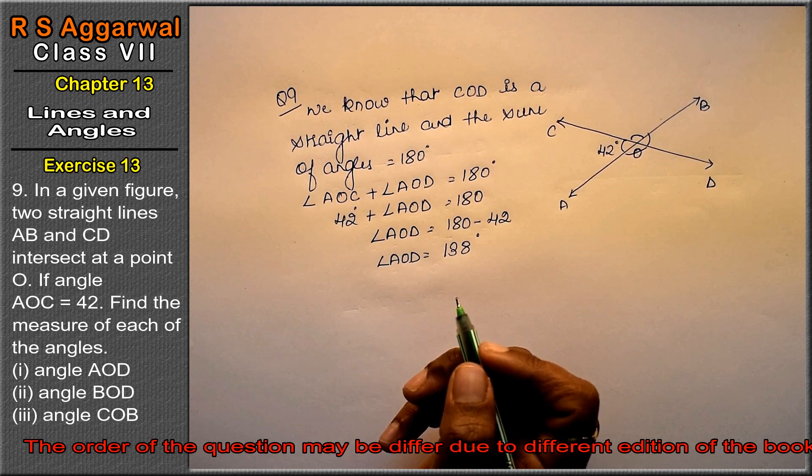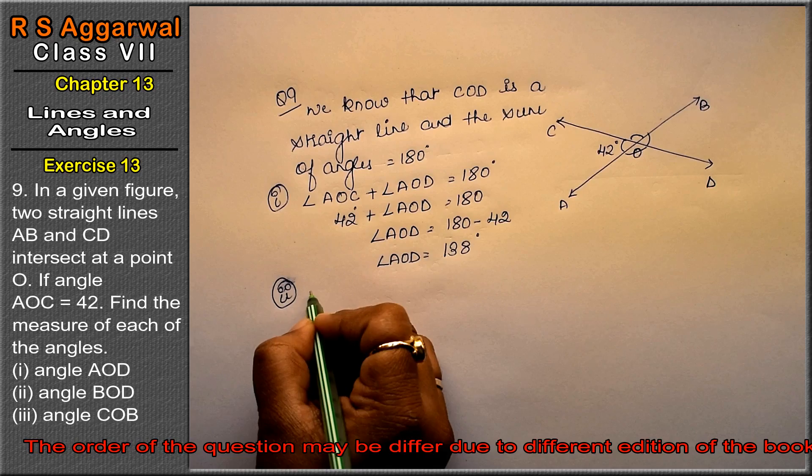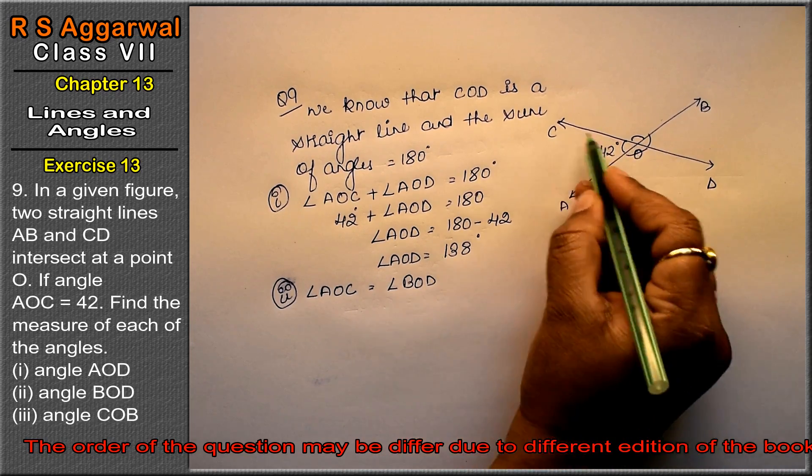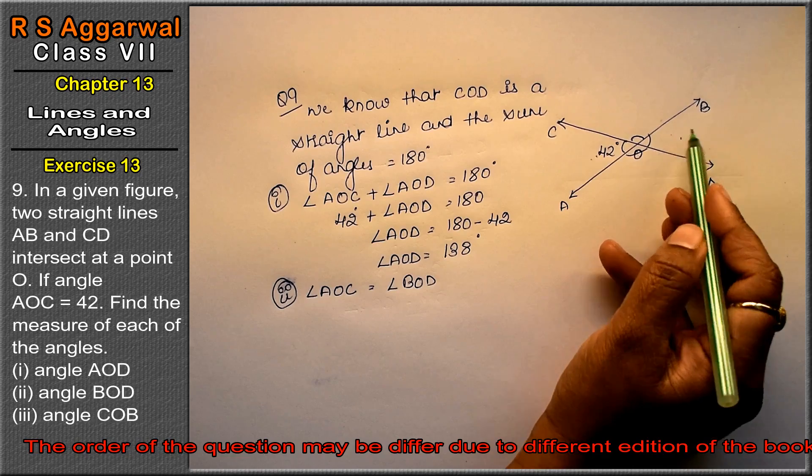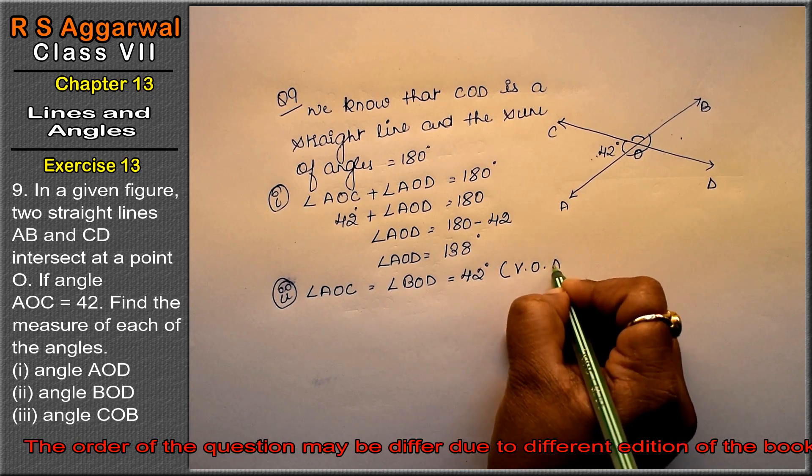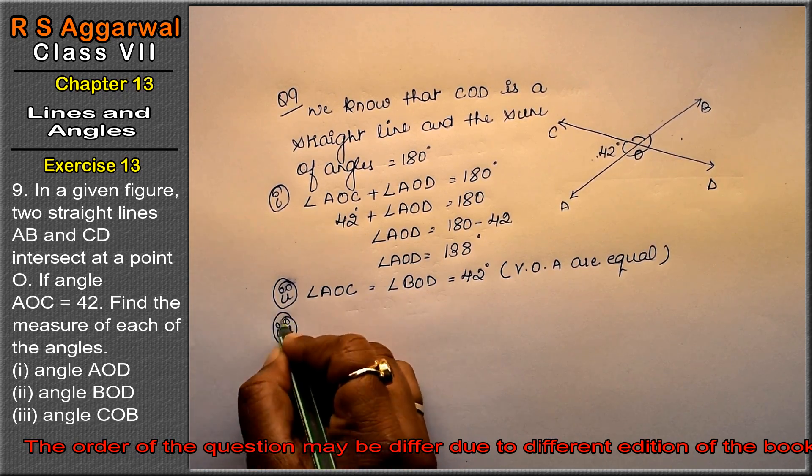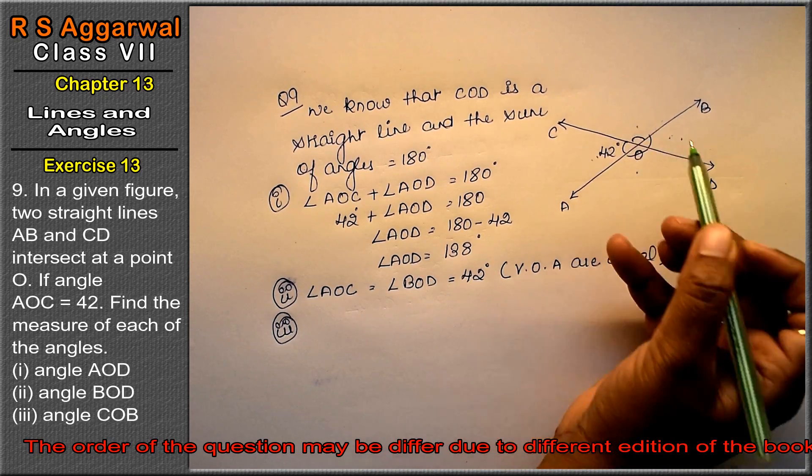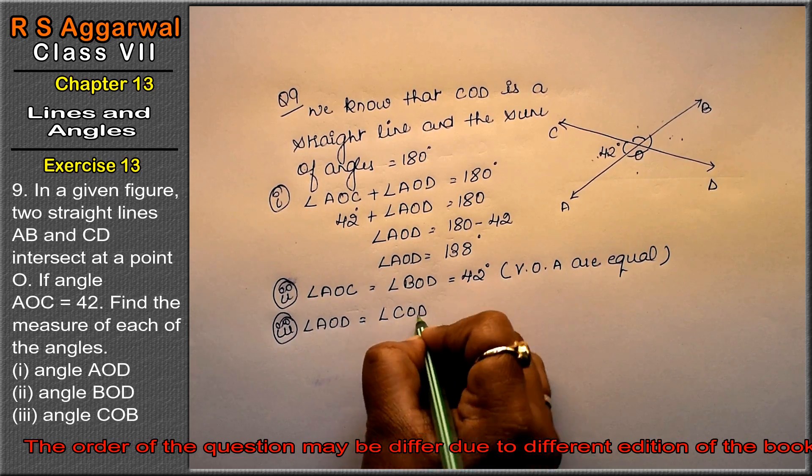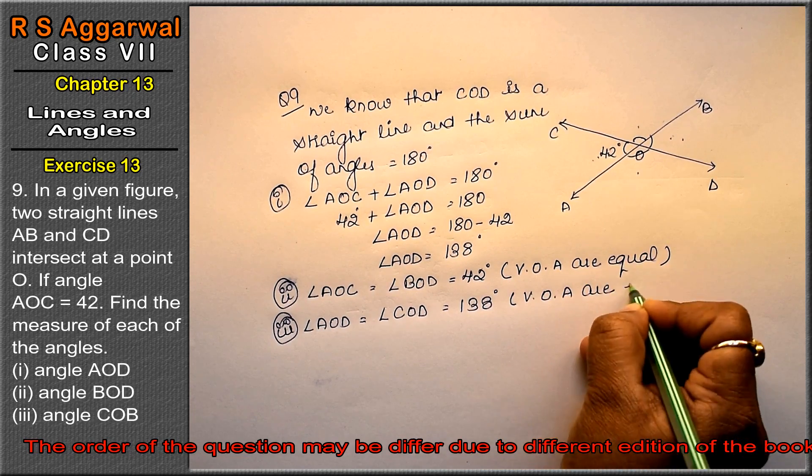Now, what will angle BOD be? Angle AOC and angle BOD are opposite angles. What are they called? Vertically opposite angles are equal. So angle BOD equals 42 degrees, because vertically opposite angles are equal. Right friends. Now third part: just as these two are vertically opposite, these two are also vertically opposite angles. So angle COB equals angle AOD equals 138 degrees, because vertically opposite angles are equal.